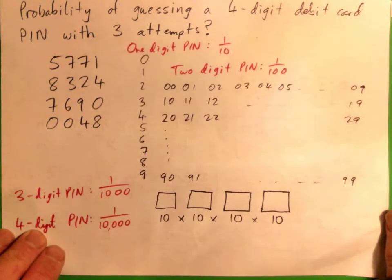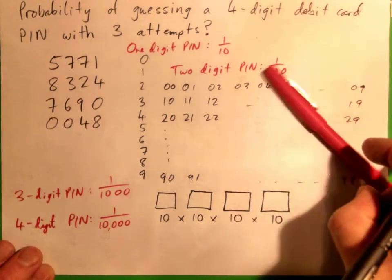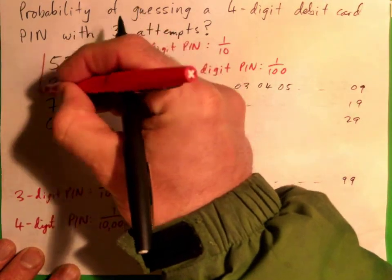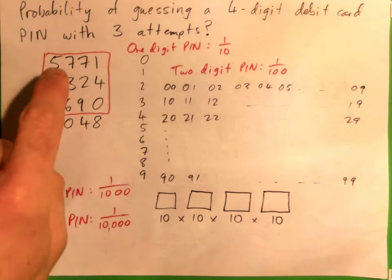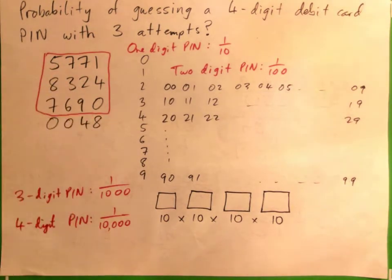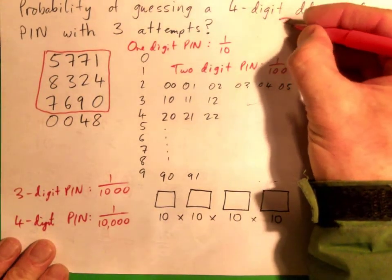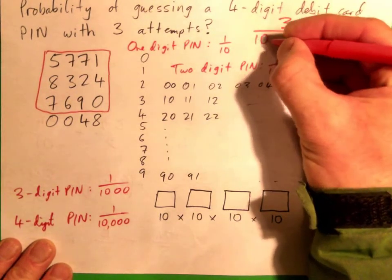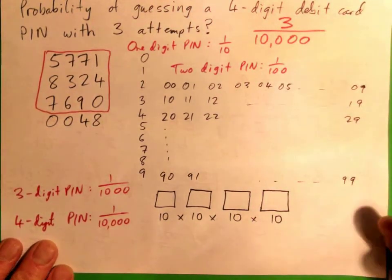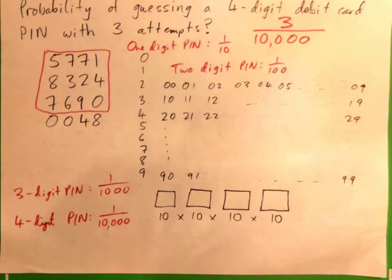What's the probability of guessing a four-digit debit card PIN with three attempts? You're guessing three PINs — say 5771, 8324, and 7690 — out of a possible ten thousand. The answer is three possible outcomes out of ten thousand total possible pins. So the probability is three out of ten thousand.